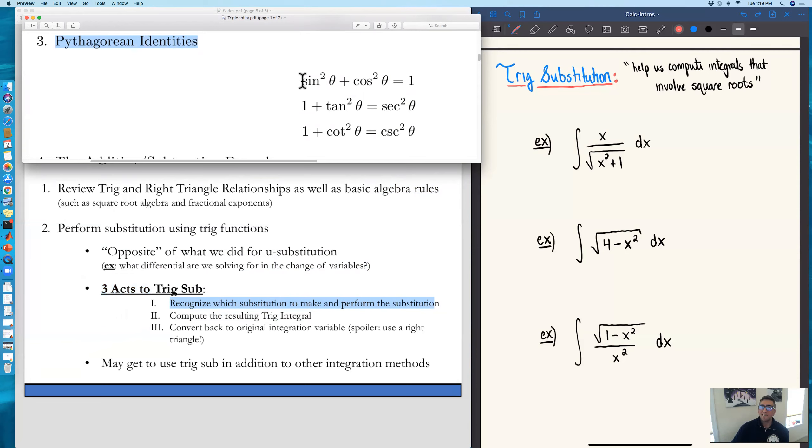So this is where we start seeing things like sine squared plus cosine squared equals one. One plus tangent squared equals secant squared. We're going to be playing and shifting around those trig identities to help us out for trig sub.